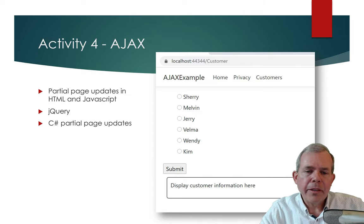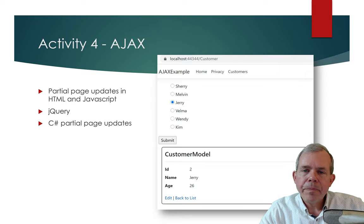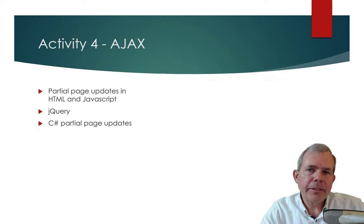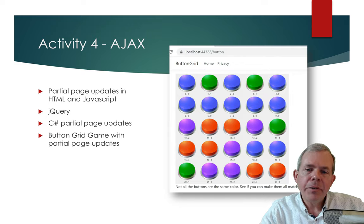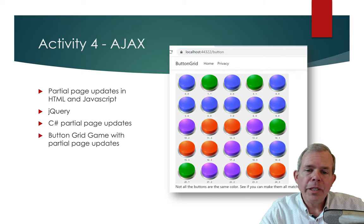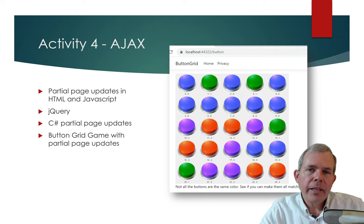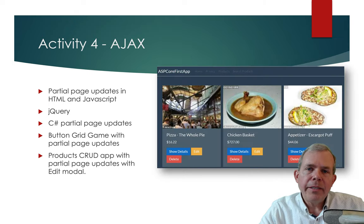We'll have a list of people, and when you click one of them, a partial page update will display the details of that customer below. Then we'll revisit the Button Grid game, and instead of refreshing the entire page when you click a button, only that button will refresh. After all, why would you display 25 buttons again if only one of them changed color? That's where AJAX and partial page updates make sense.